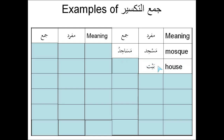House is Baytun, Baytan, Baytin, depending on its position and action in the sentence. And the plural is Buyutun. If you see that the Ta is not vowelled, that means the word is Mun-Sarf. It can be Buyutun, Buyutan, or Buyutin at the end.